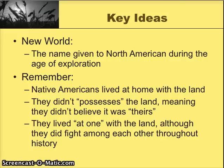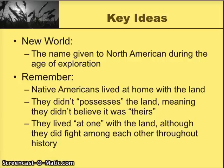The first key idea is the New World. As explorers came from Europe, they came over and gave the New World label to basically all of the Americas, but during North America, this is what's concerning us in Kansas. Another idea to keep in mind is that Native Americans — the tribes we just discussed — lived at home with the land. This means they didn't possess the land they lived on; they didn't claim it as theirs. Instead, they lived at one with the land. They did fight with other tribes for control of food rights, traveling herds, and such, but it wasn't the same as what the European definition of possessing land was.